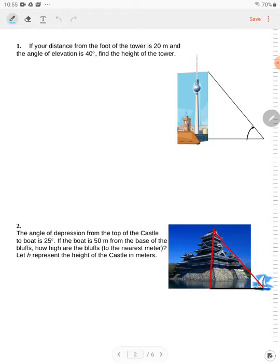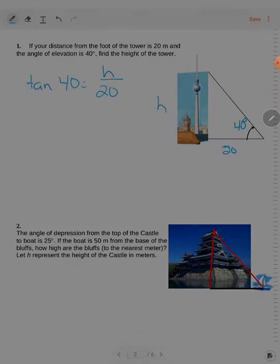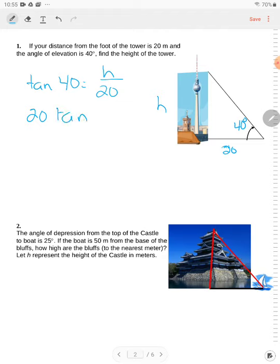Number one, if the distance from the foot of the tower is 20 meters and the angle of elevation is 40, find the height of the tower. So here's your 40 degrees, here's your 20 meters, and the height is here. Using opposite and adjacent, tangent of 40 is equal to h over 20. So solving you have 20 tan 40 is equal to h. Using our calculator, 20 tan 40 equals 16.78 meters. However, that's more precise than the units given, which are whole numbers, so we're going to round that to 17 meters.